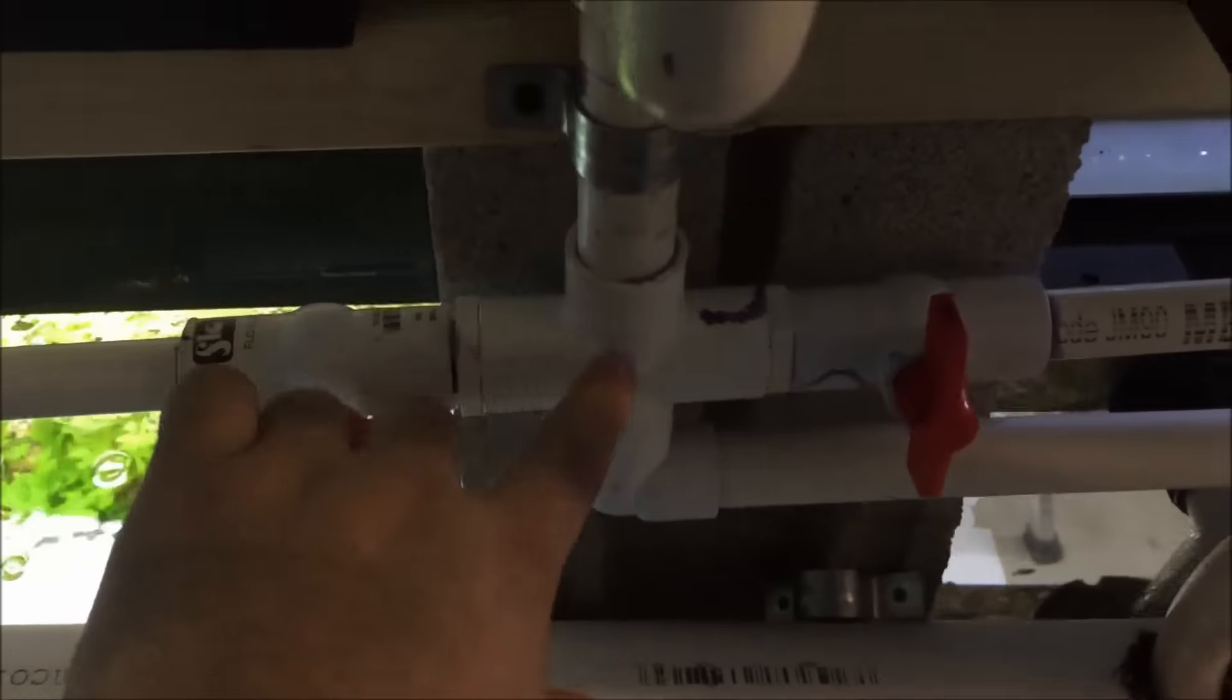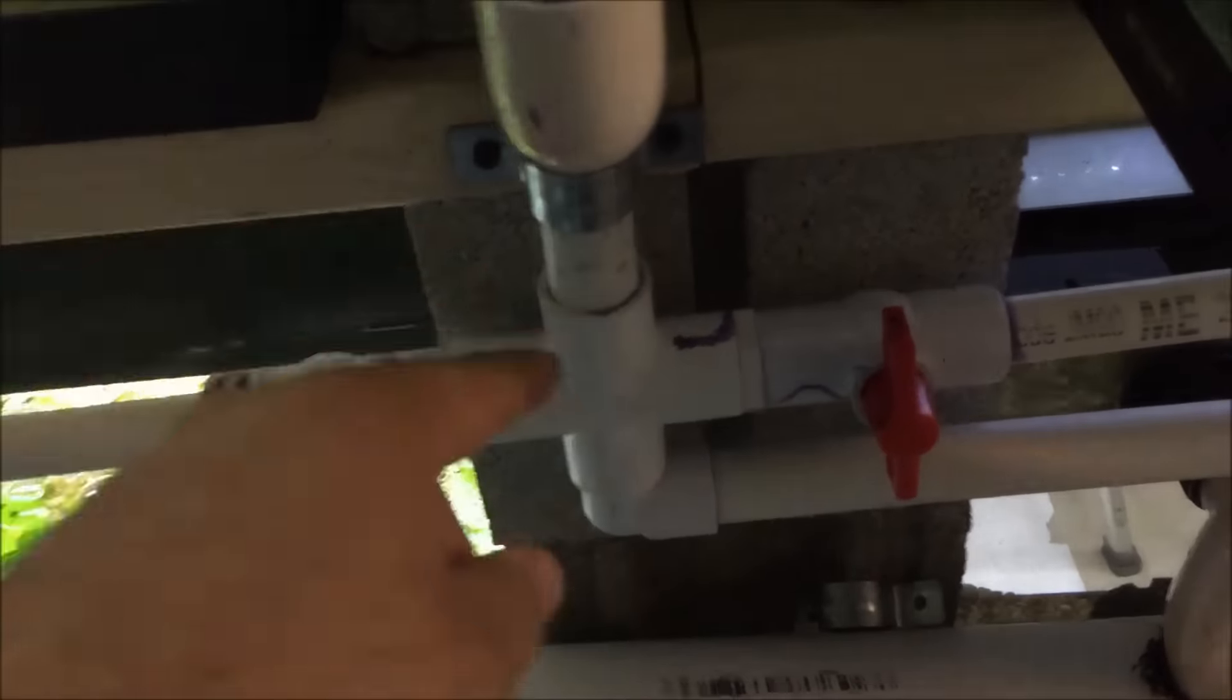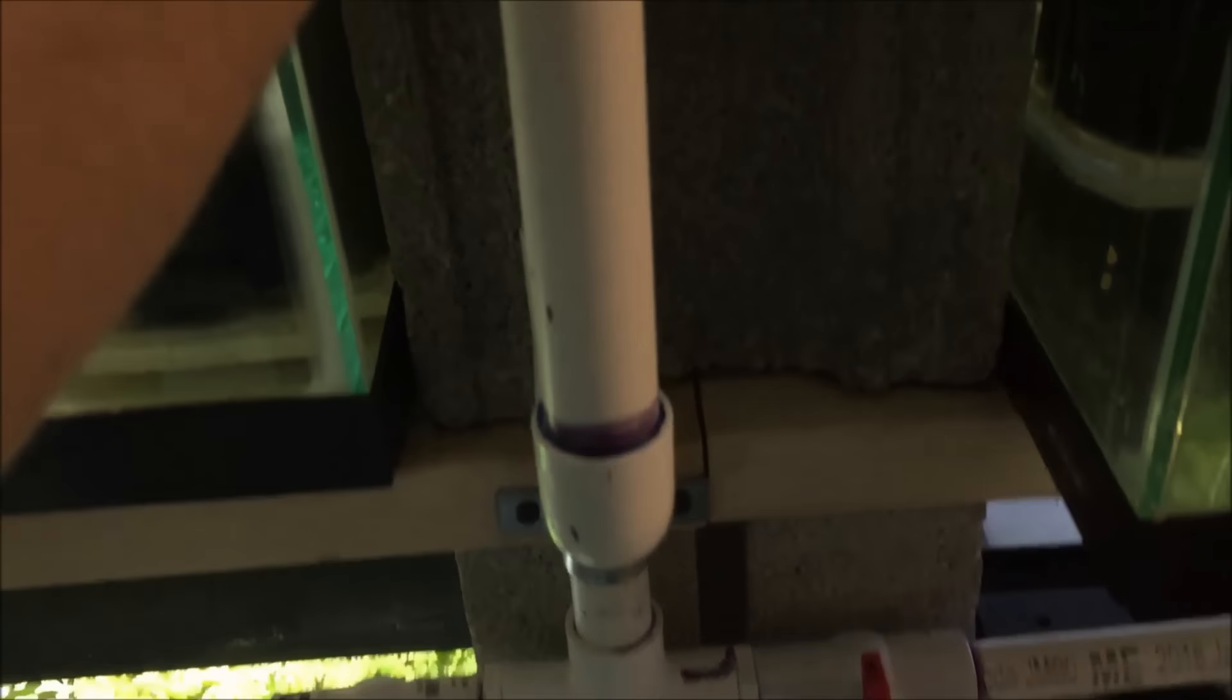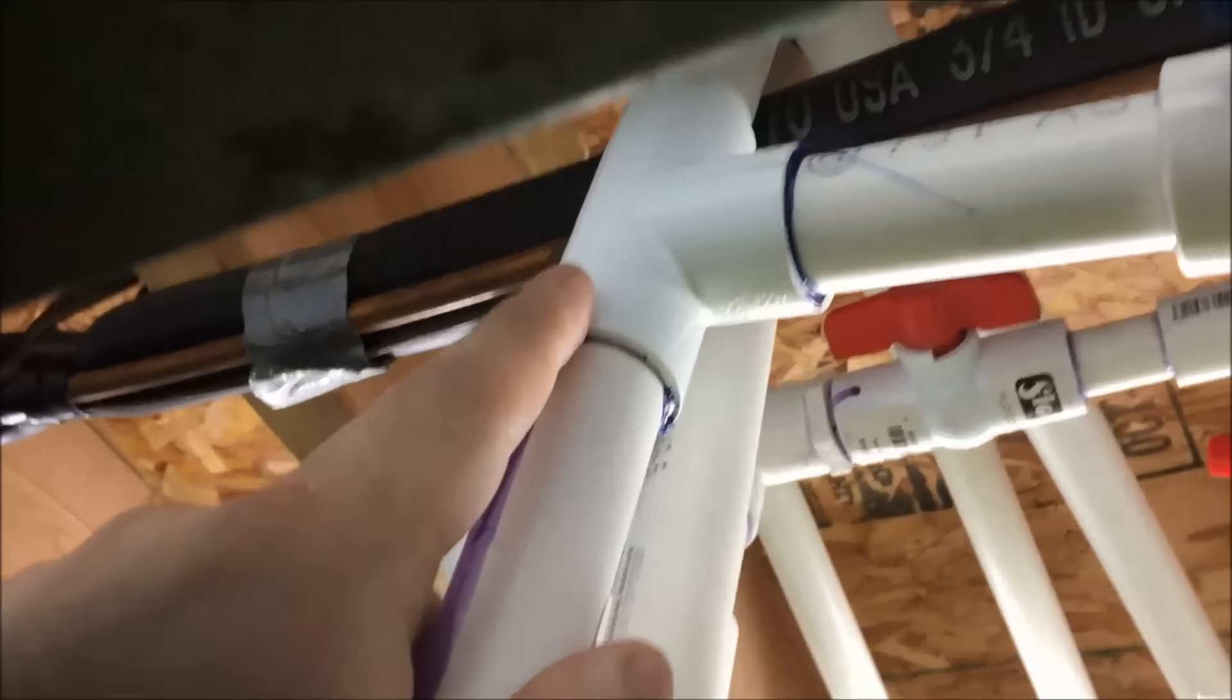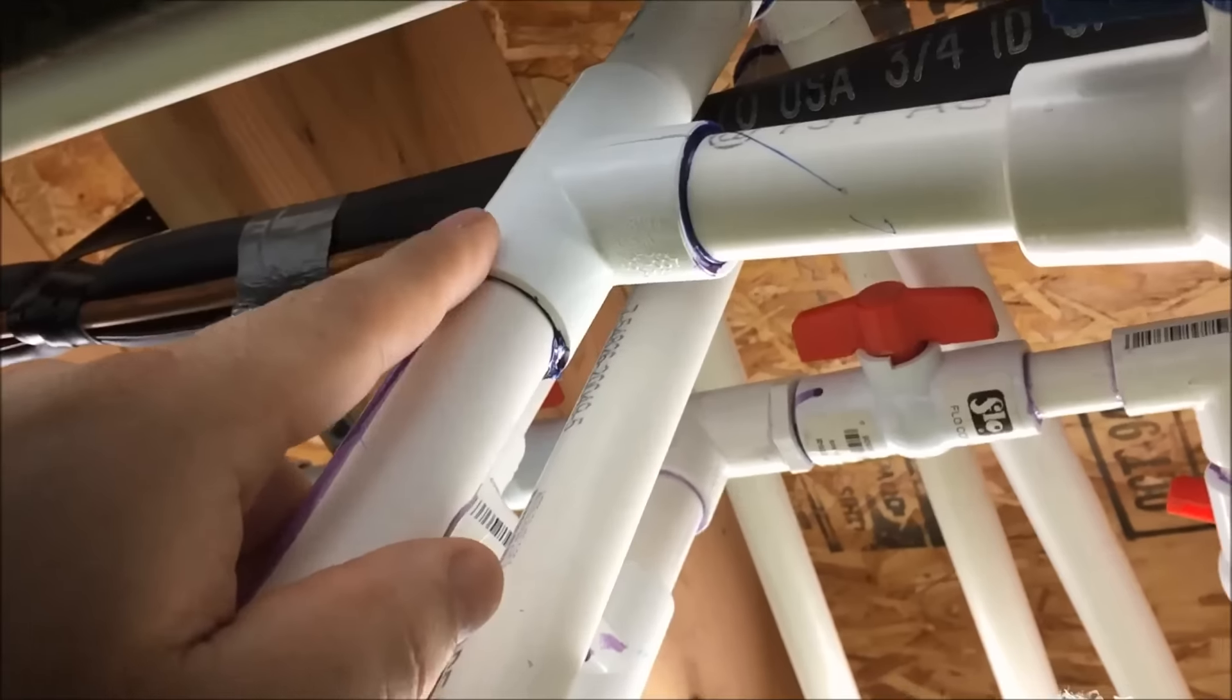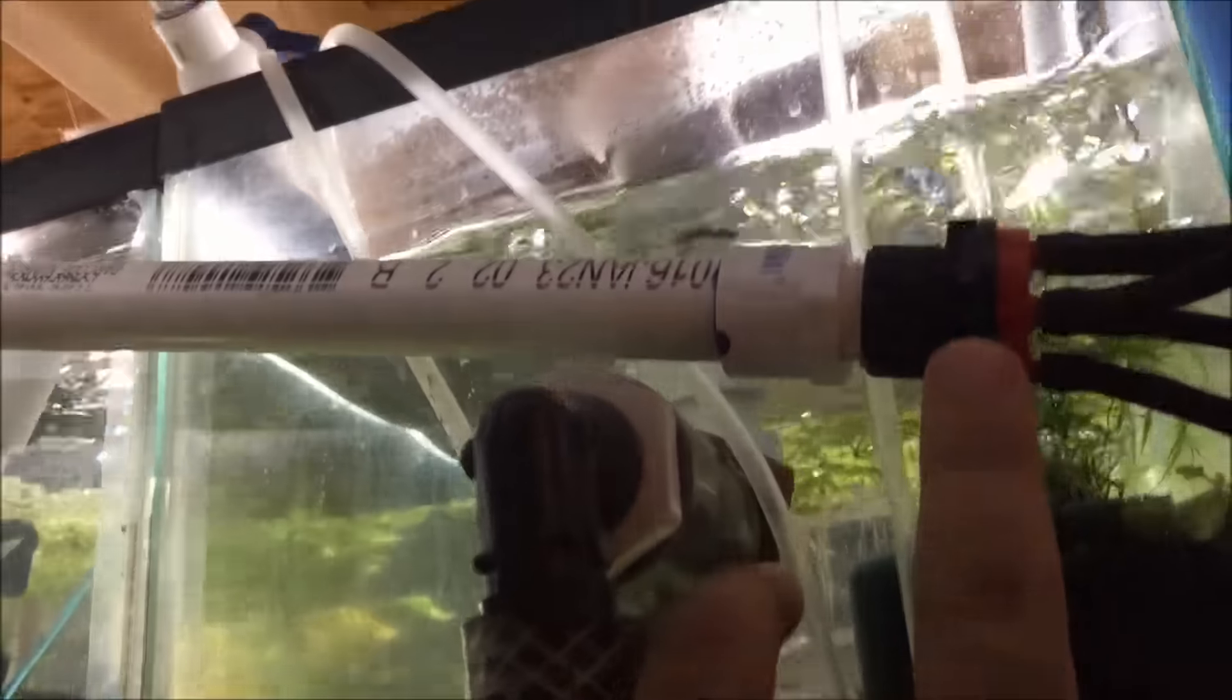Which runs all the way over here to this cross, which gets fed by this pipe, which is zone three. So then what I did was, this is the fill, the input I guess. I teed in here, added a ball valve because why not, added this nipple for future expansion, and then added this drip emitter manifold on the end.